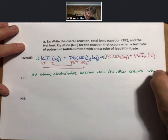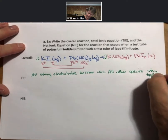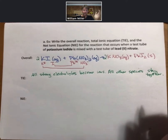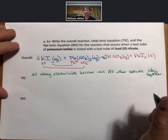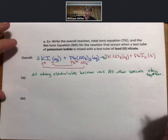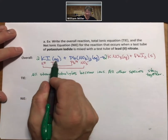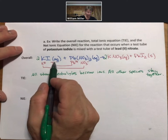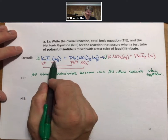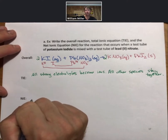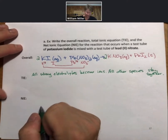All other species stay together, which just means you're not going to break them up into ions. And I'll show you what that means, and we'll talk about this through the next several pages with the examples. Potassium iodide is aqueous, and it is an ionic compound, therefore it is a strong electrolyte. Strong electrolytes break up 100% into ions.